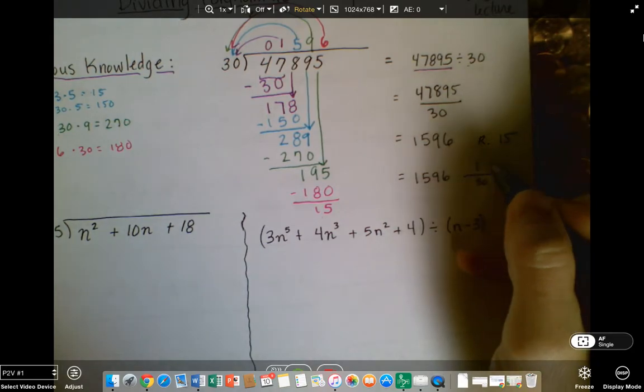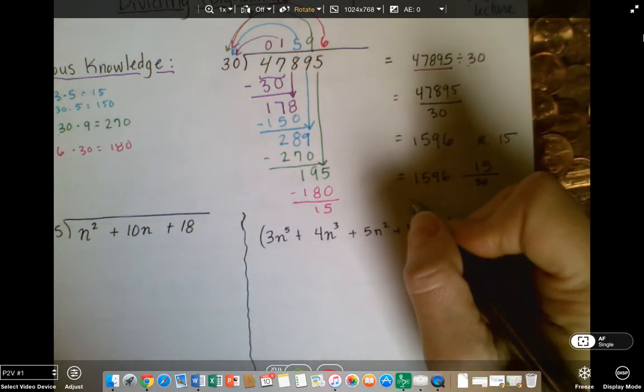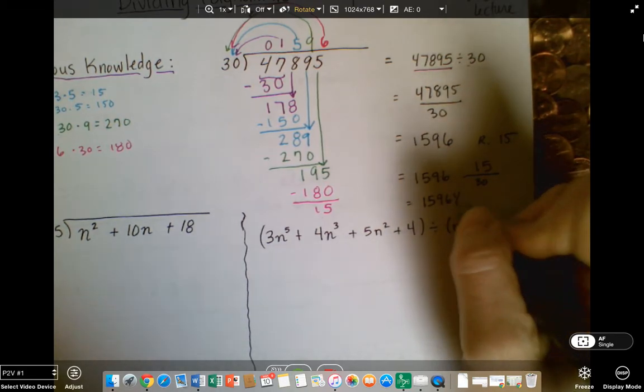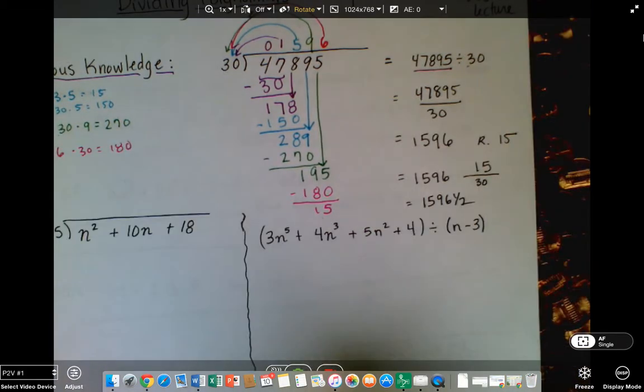Or you might see it written as 1,596 with 15 pieces still being divided by 30, which would give us 15 thirtieths, which then simplifies to 1,596 and a half. So that's long division, just a little review.